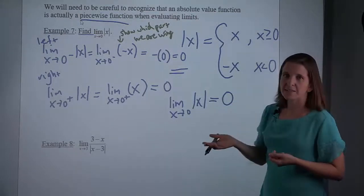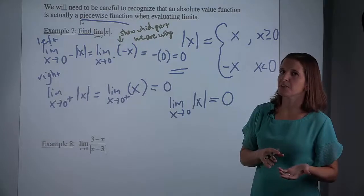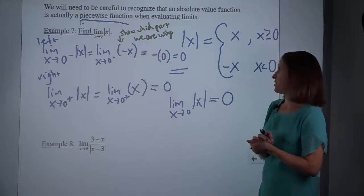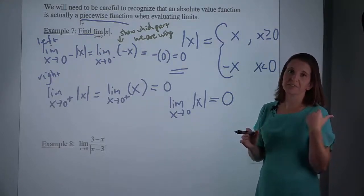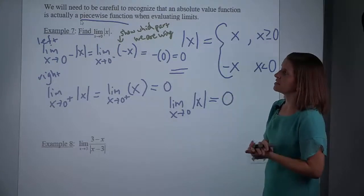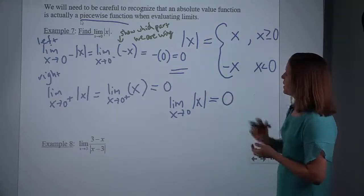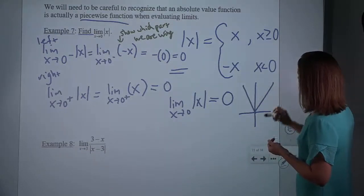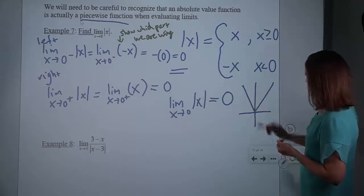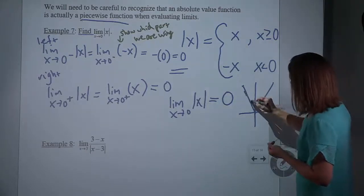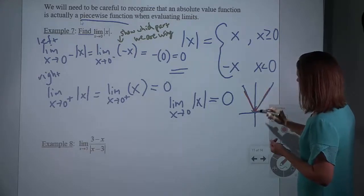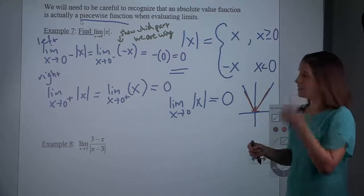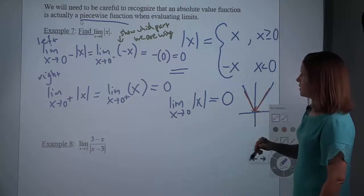You might be wondering why on this problem I did the whole left-and-right thing and on the last few I didn't. Again, it's all about if you're in a nice part of the function where you're doing the same thing on both sides. In our others, they were polynomials where we were doing the same thing on both sides. And here it did break down to a piecewise function. If you actually graph the absolute value graph, you can see that if you were tracing it from the left or from the right, you would be heading towards 0. So it does match up with our understanding of taking limits graphically.